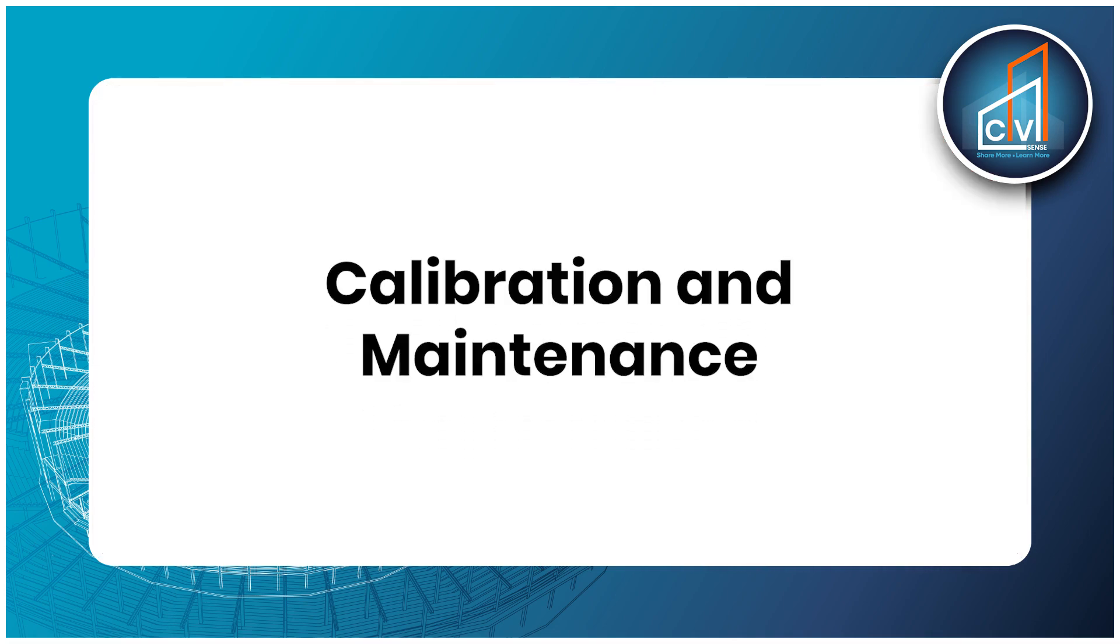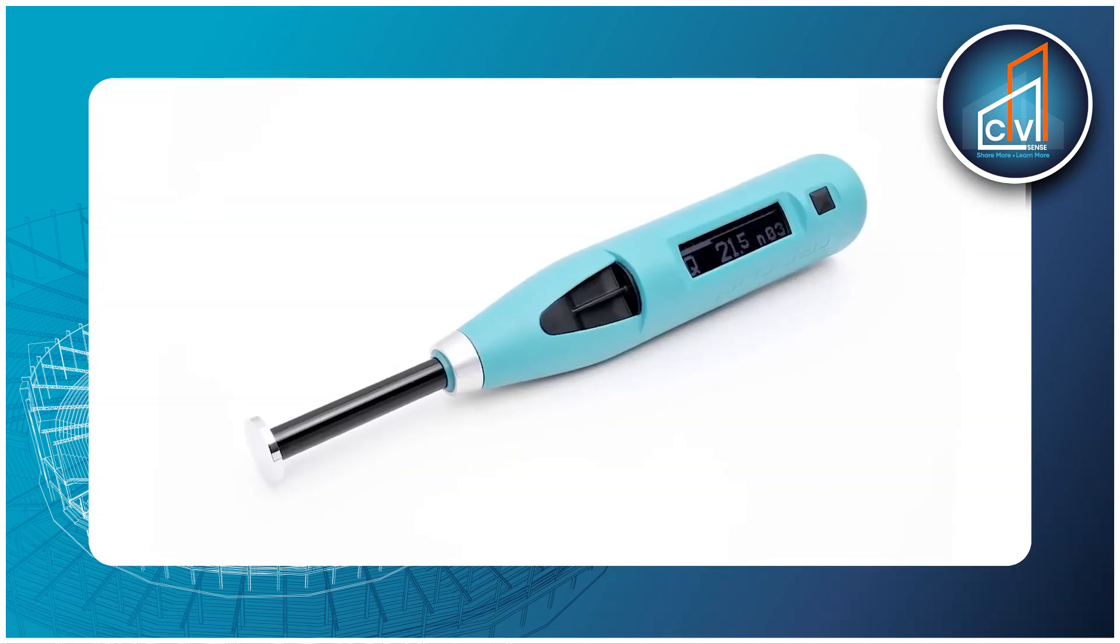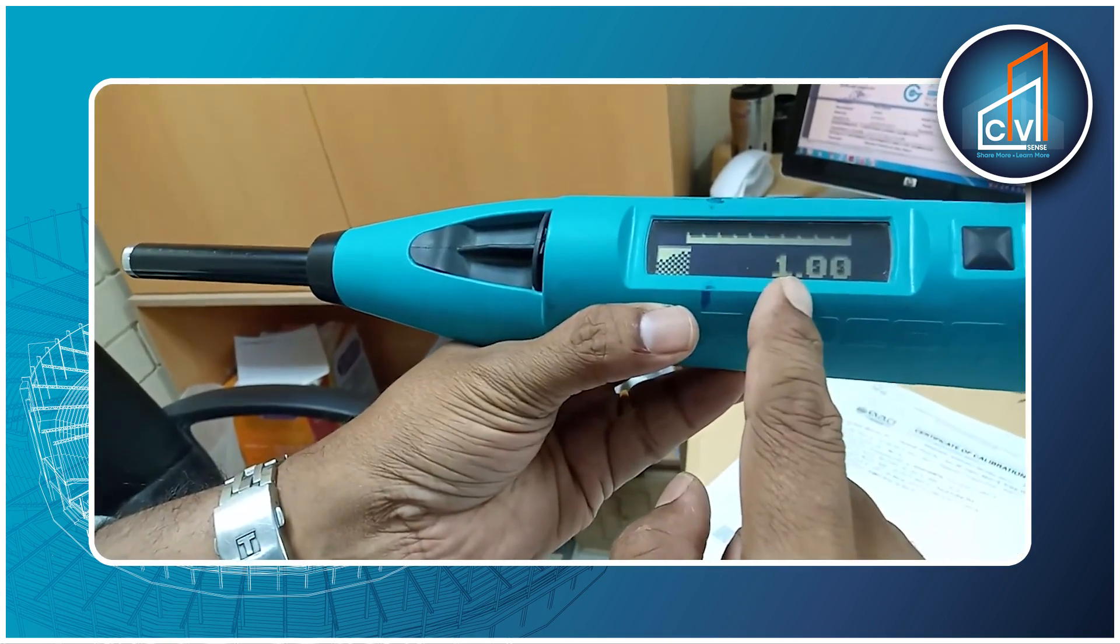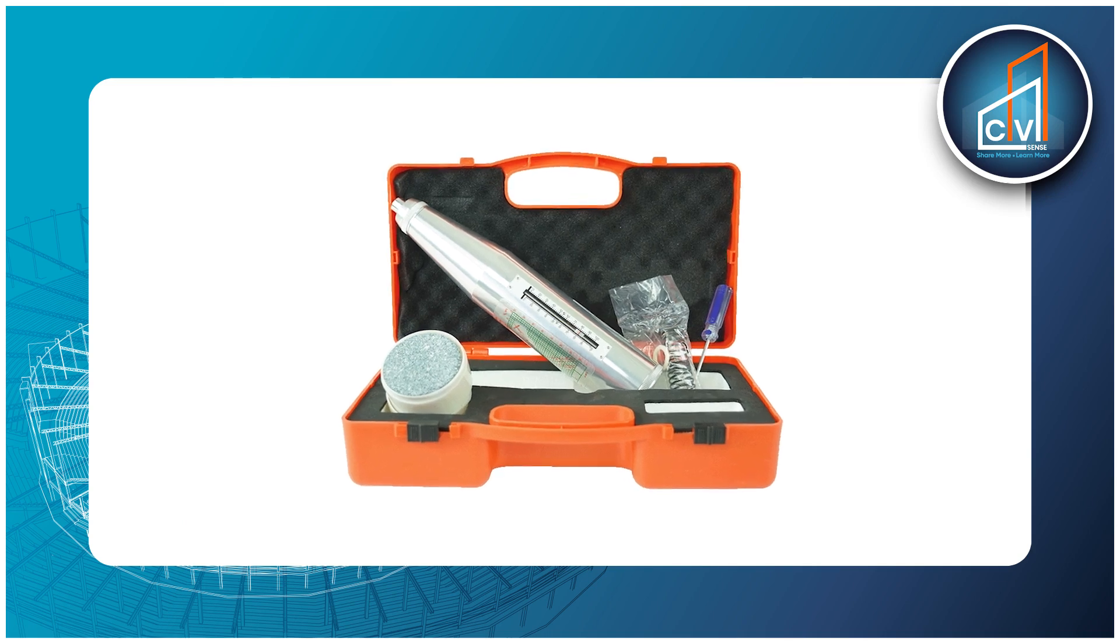Calibration and maintenance. To ensure accurate readings, Schmidt rebound hammers need regular calibration and maintenance. Calibration involves comparing the hammer's readings to known standards, while maintenance includes cleaning and inspecting the device.